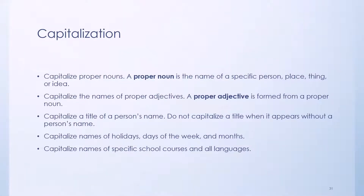Our next topic is capitalization. We need to make sure that we know how to capitalize correctly. First, we capitalize proper nouns. A proper noun is the name of a specific person, place, thing, or idea. We also capitalize proper adjectives, which are formed from a proper noun. We also capitalize the title of a person, but only when the name of the person goes along with that title. For example, we don't have to capitalize 'professor' alone, but if we say 'Professor Ruben,' then we capitalize both the title and the name.